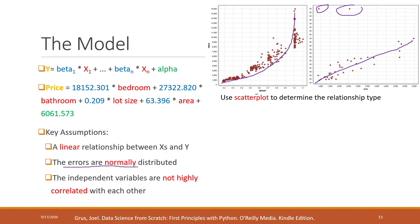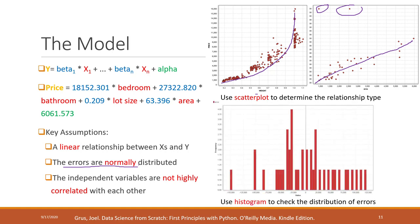To check whether the errors are normally distributed, we can create a histogram and check the distribution of those errors to see if it looks like a bell curve. If it does, then the errors are normally distributed. To check whether the independent variables are highly correlated, we calculate the correlations among those independent variables and see whether or not they are highly correlated.